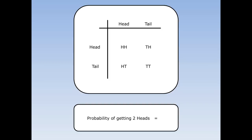What's the probability of getting two heads? Well there's only one place where there's two heads and there's four things that could happen. So the chance of getting two heads is one out of four. What's the probability of getting two tails when I throw two coins? There's only one place where there's two tails and there's four things that could happen. So the chance of getting two tails is one out of four.